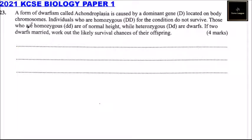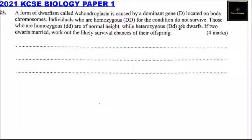Question number 23. A form of dwarfism called achondroplasia is caused by a dominant gene D located on body chromosomes. Individuals who are homozygous DD for the condition do not survive. Those who are homozygous dd are normal height, while heterozygous Dd are dwarfs. If two dwarfs are married, work out the survival chances of their offspring.